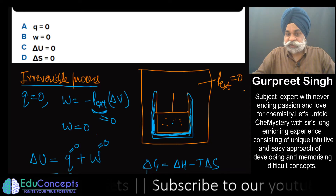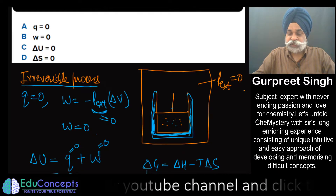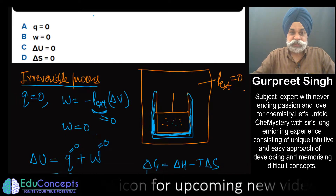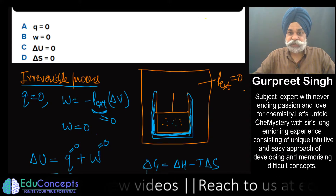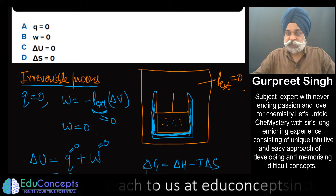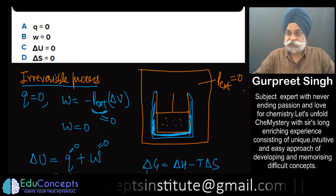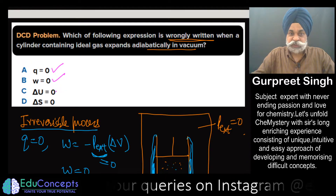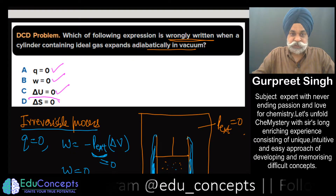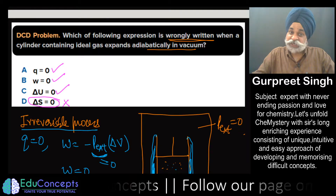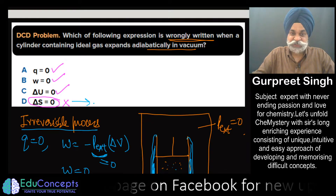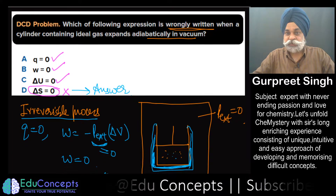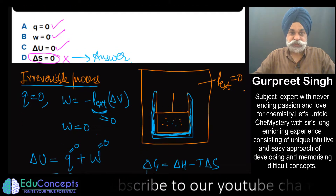This process occurs because the gas tries to move upward and take more volume, so there is an increase in entropy. In this particular problem, what is being asked is: which of the following is wrongly written? The terms q = 0, w = 0, and ΔU = 0 are all correct. So the wrong statement is the remaining option — that is our answer.